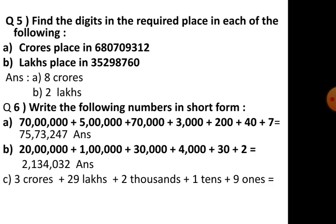Question 5: find the digit in the required place in each of the following. We need to find which digit is in the crores place. We make the place value chart again: ones, tens, hundreds, thousands, ten thousands, lakhs, ten lakhs, crores. The digit in the crores place is eight, so the answer is eight.